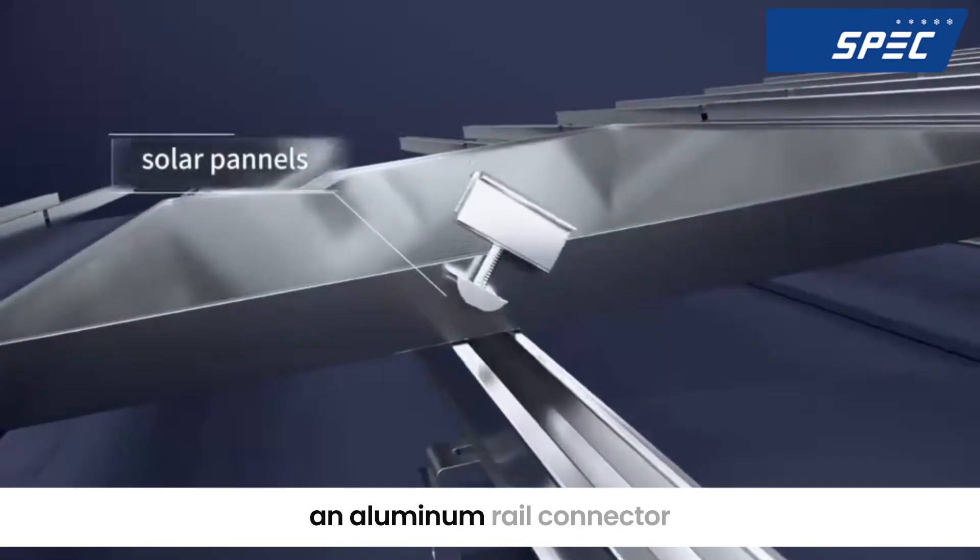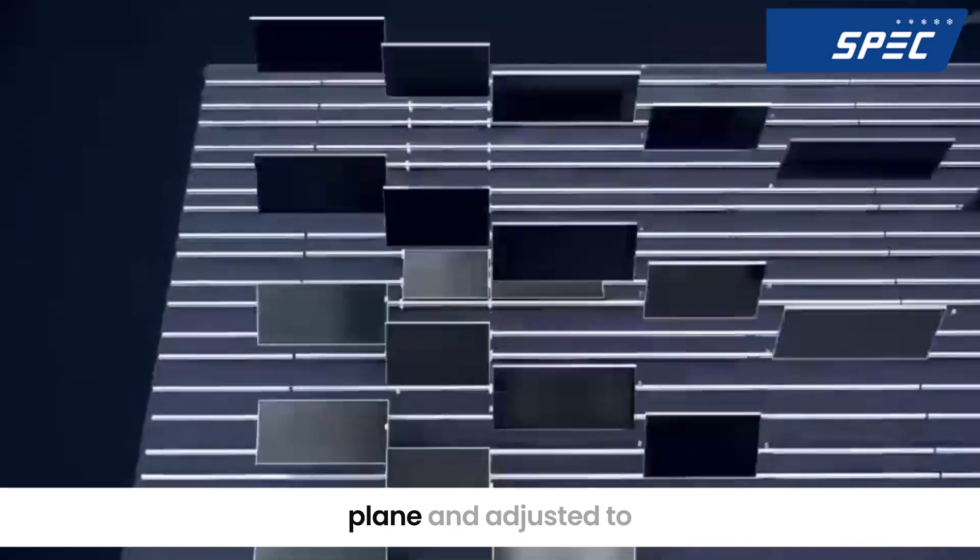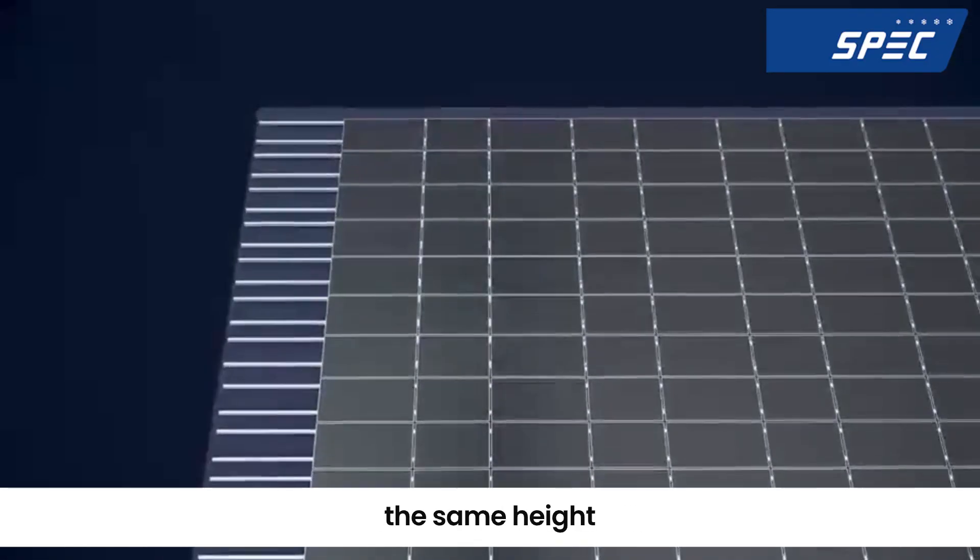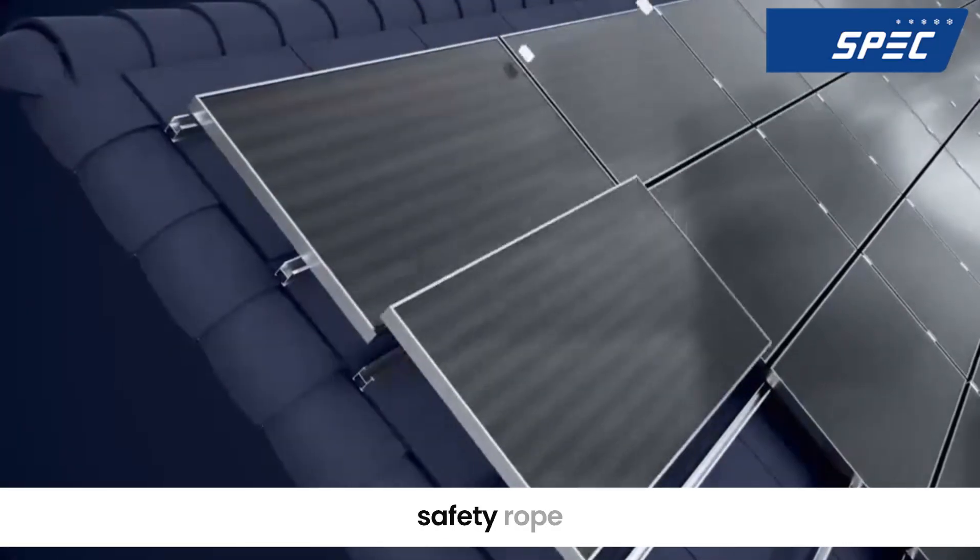Connect the brackets using an aluminum rail connector. Ensure that the brackets are in the same plane and adjusted to the same height. Finally, adjust and install the panels using a safety rope.